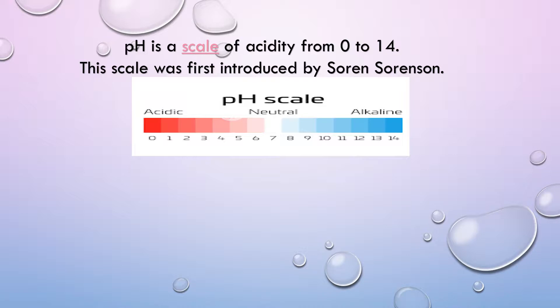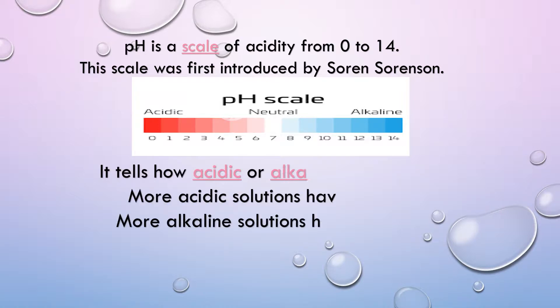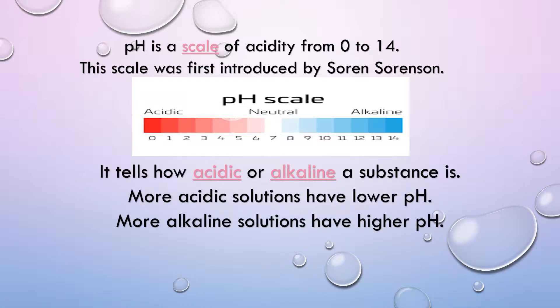On the pH scale, from 0 to 7 the solution will be acidic. At 7, the solution will be neutral. From 7 to 14, the solution will be alkaline.